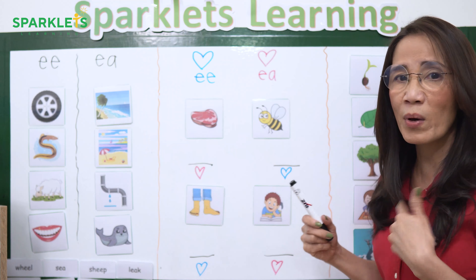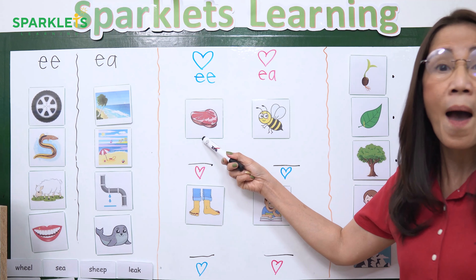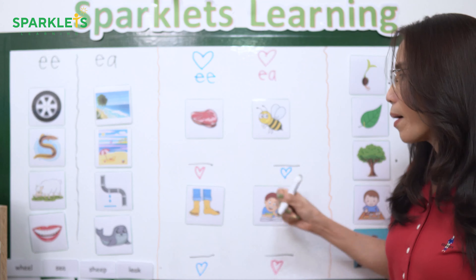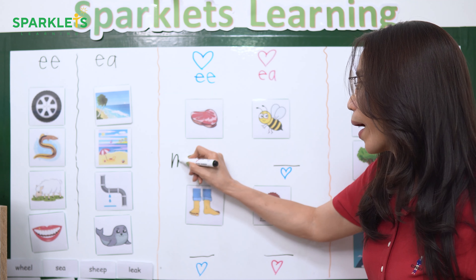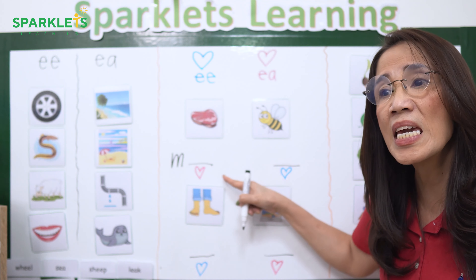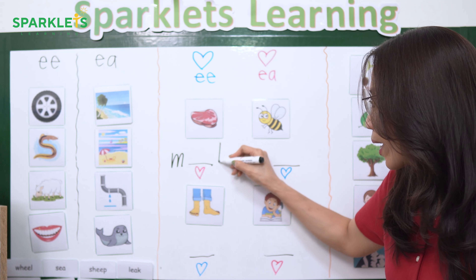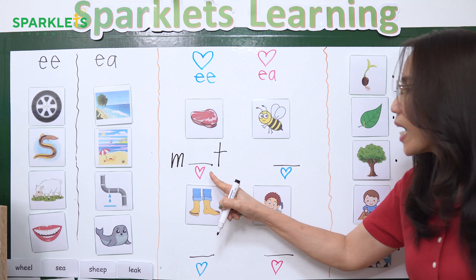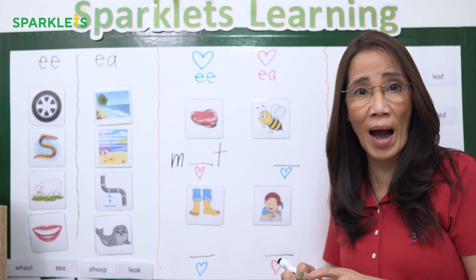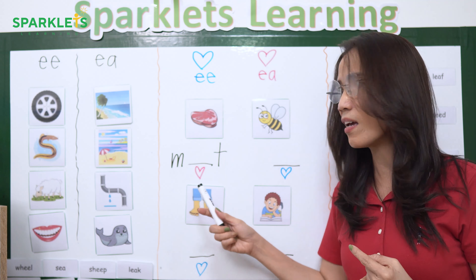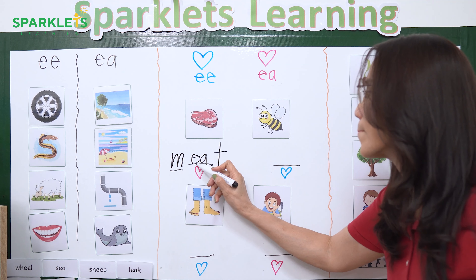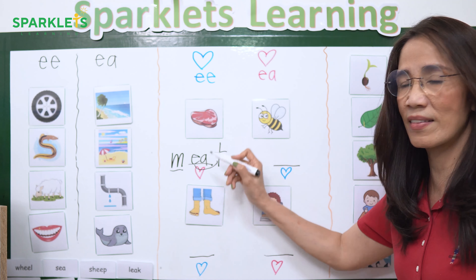Since you already introduced the pictures with them, they already know that this is meat. Ask them the beginning sound — what is the beginning sound of the word meat? Mmm. So I will write M. What is the last sound? T. Now look at this one — is it EE or EA? It's a red heart. Since the children already know by heart that red heart is EA, they will say EA. So you write EA and ask them to read again — M-EA-T — meat. That's the spelling of meat.